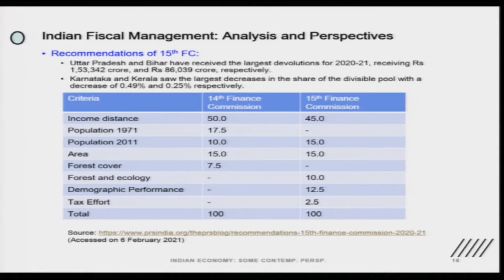This particular aspect is important for cooperative federalism. It has been argued that states which are population-rich end up getting a higher share of revenue by default. But those states which are efficient in managing their population plus economic activity get a limited share. There are different ways to compensate for losses, but as per the 15th Finance Commission report this is what it looks like.